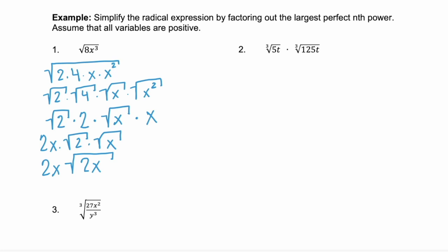In example 2, we have a cube root and another cube root. I know I can't find the cube root of 5 or the cube root of t. But I can find the cube root of 125. So let's rearrange and get the cube root of 125 by itself. First step would be to combine all of them — 5 times 125 times t times t, all under the cube root.